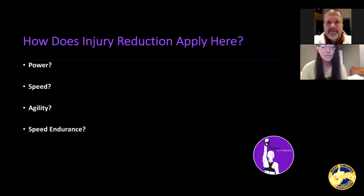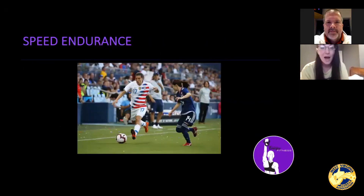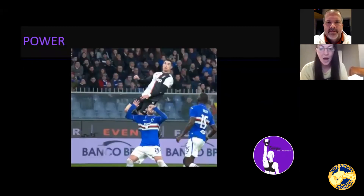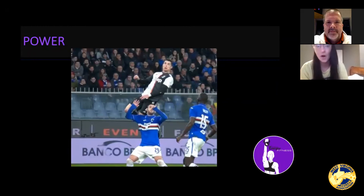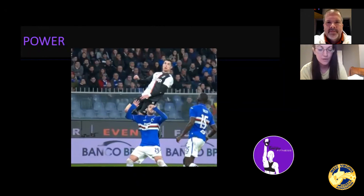So with all these performance components, how does injury reduction apply? Returning to power — he's jumping off the ground, creating force with leg strength. But how is he landing that jump without twisting an ankle or blowing a knee? He also needs leg strength. We need to be training the eccentric, or lengthening, action of the hamstrings. I'll give you some sample movements later that train both power and the injury reduction component of something like this.